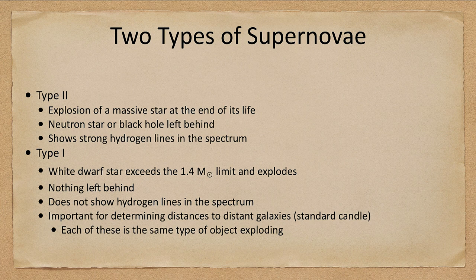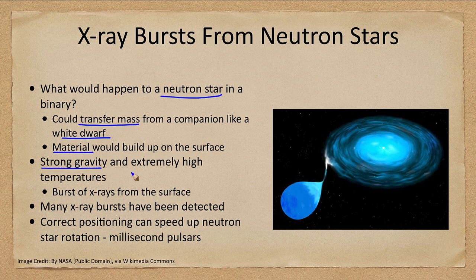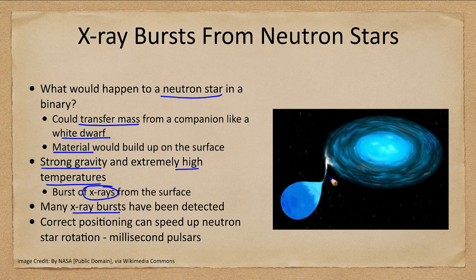Those are two things that can happen with a white dwarf star. How about a neutron star? What if instead of a white dwarf, we had a neutron star in a binary system? The exact same thing as we looked at for a nova could happen here — you could transfer mass from a companion just like we did to the white dwarf, and material would build up on its surface. The difference is that gravity is much stronger and temperatures are much higher. So instead of getting bursts of visible light, we get bursts of X-rays from the surface. In fact, many X-ray bursts have been detected. It is the same process as a nova, just with a neutron star at the center collecting the material, and its increased gravity and increased temperatures cause it to undergo a burst of energy from its surface.